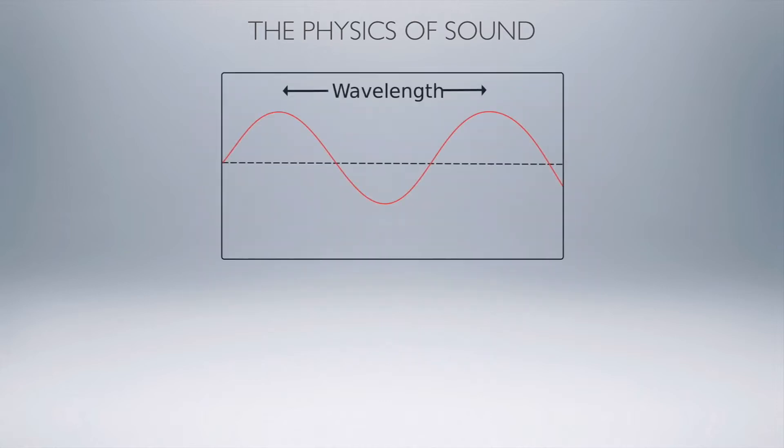So if we look at our wavelengths, here's a very easy wavelength calculator. That is 1128 feet per second, and we just divide that by Hertz.